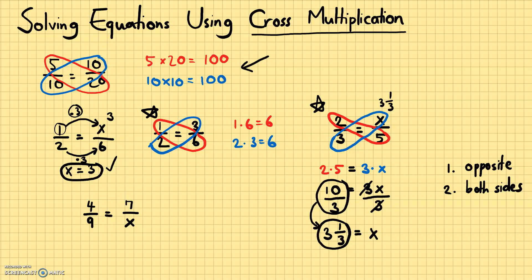This means we'll use cross multiplication again. Cross multiplying: 4 times x must equal 9 times 7. 4 times x stays as 4x since we don't know x, and 9 times 7 equals 63. So 4x equals 63. Now solve for x by doing the opposite of times 4, which is divide by 4, and do that to both sides.